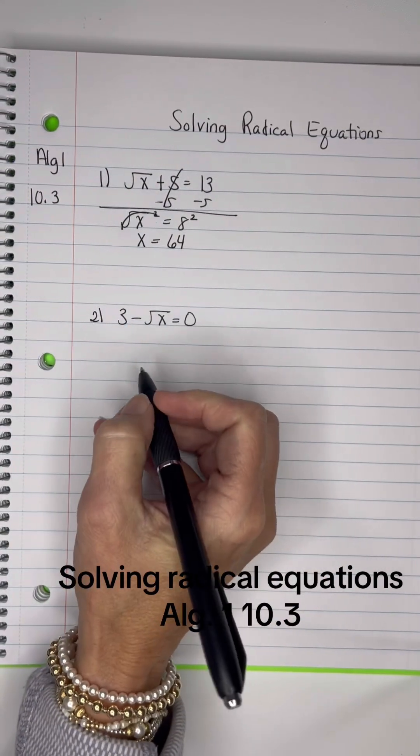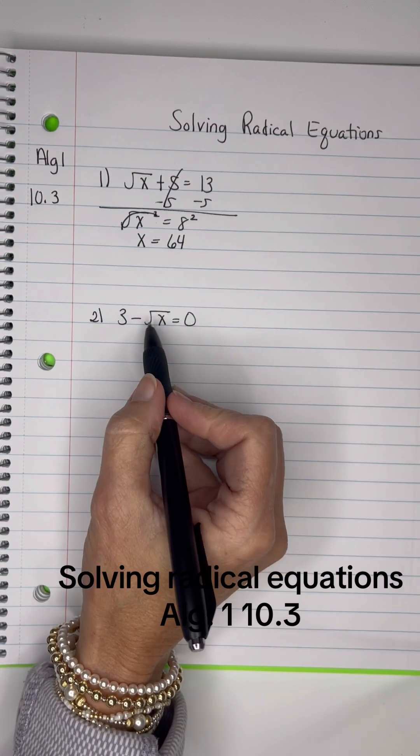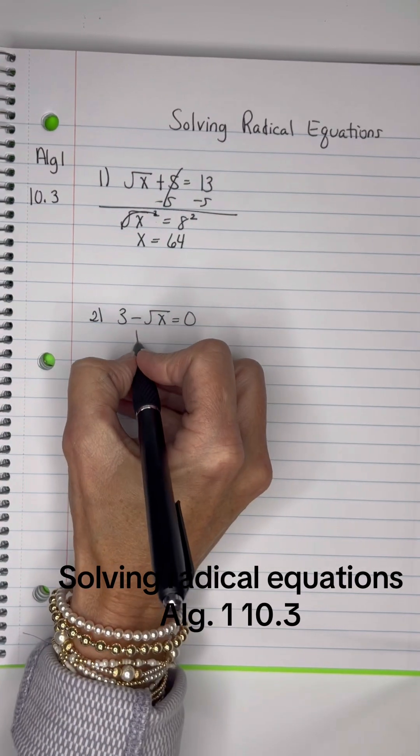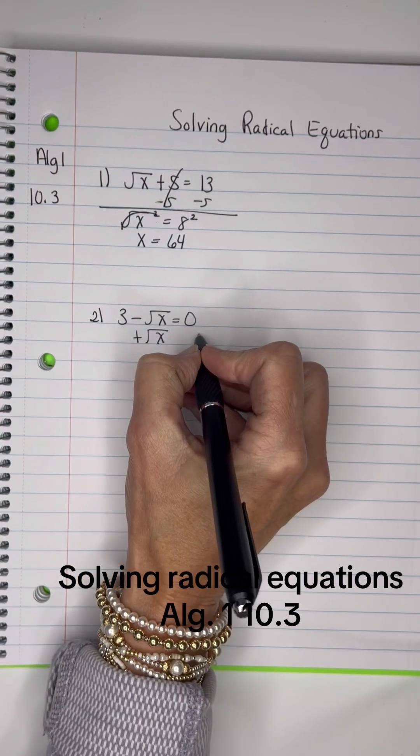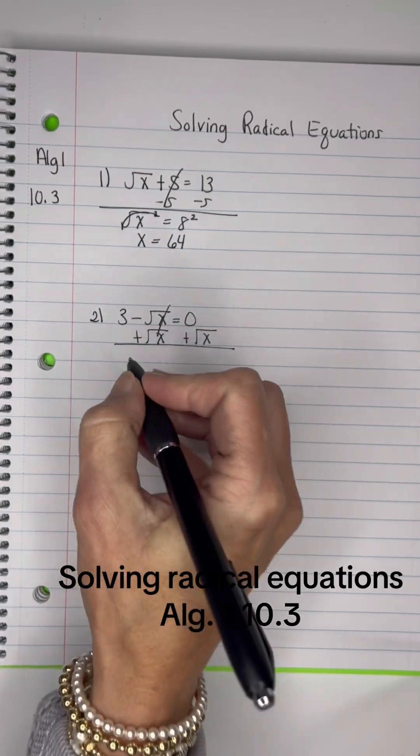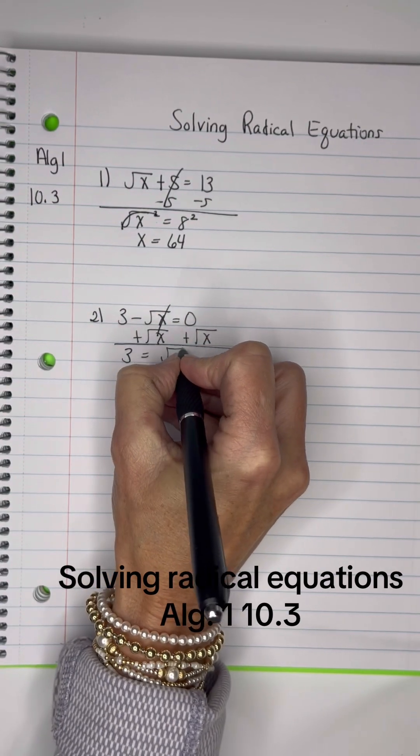All right, on this one, instead of subtracting 3 from both sides and getting this X alone, since it's already the square root of a negative X, let's add the square root of X to both sides, and that will cause it to become positive. If it changes sides, it changes signs. So I'm left with 3 equals the square root of X.